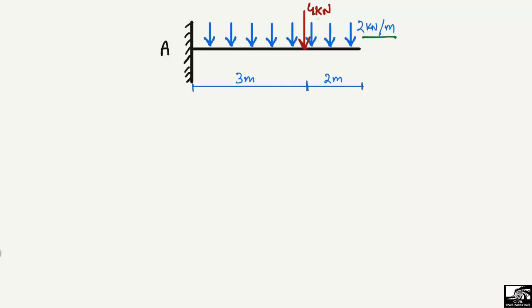The beam also has a concentrated load of four kilonewton. The total length of the beam is five meters, and the point load acts at a distance of three meters from the left end and two meters from the right end. First, we need to find the support reaction RA and the moment MA, and then we can find the shear force and bending moment diagrams.